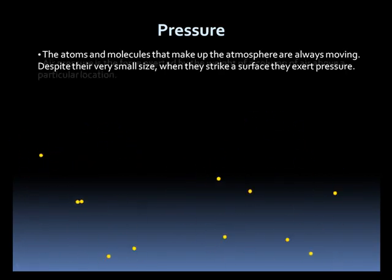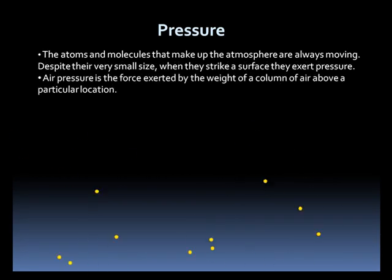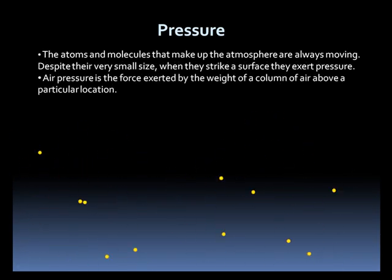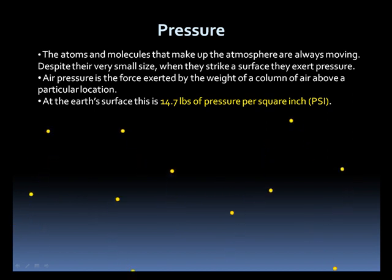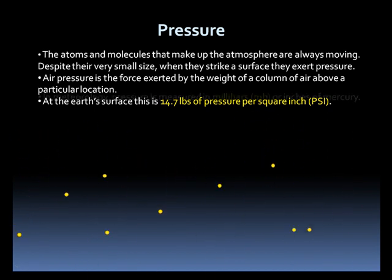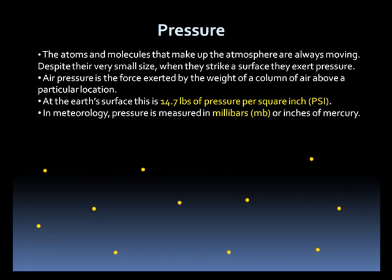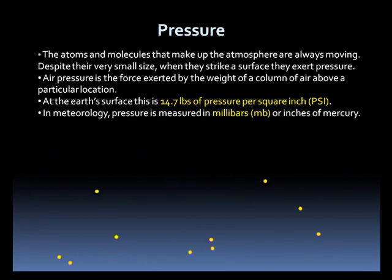Air pressure is the force exerted by the weight of a column of air above a particular location. At the Earth's surface, this is 14.7 pounds per square inch, also known as psi. In meteorology, pressure is measured in millibars or inches of mercury.